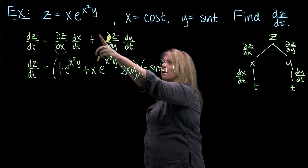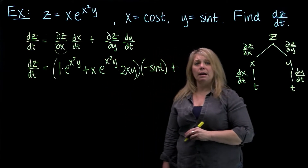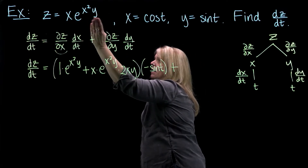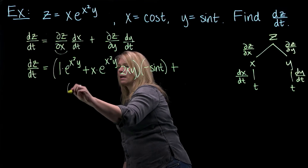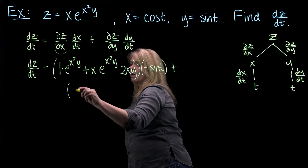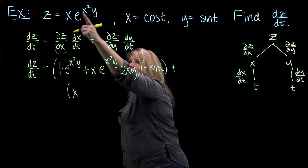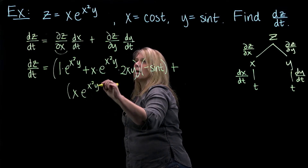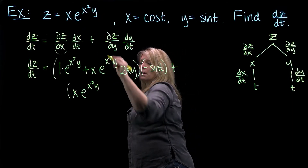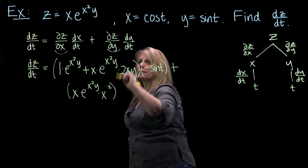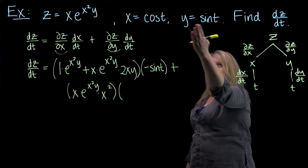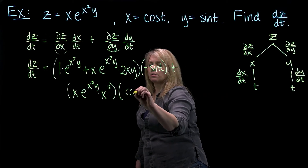Then I add del z/del y. I'm going to differentiate this function with respect to y. Notice I don't need product rule here — y only occurs in the exponential part. So the derivative of z with respect to y: the x out front just comes along, and then the derivative of e to that power is e to that power times the derivative of the exponent with respect to y, which is just x². So all of that is my del z/del y. Then times dy/dt — using the y function and differentiating with respect to t, I get cos(t).